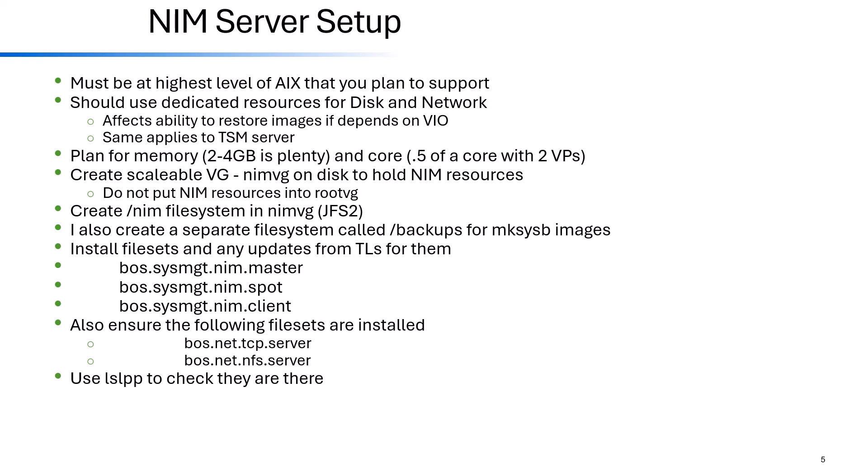If your NIM server is an LPAR rather than a dedicated server, give it dedicated resources — it should not get its resources from the VIO servers, since one of its purposes is to install and recover those VIO servers. It should have its own fiber card to the SAN and its own network card. For memory, typically eight to 16 GB is sufficient, and it only needs about half a core or two VPs. Create a volume group for NIM outside of rootvg — I typically call it nimvg — and create it as a scalable volume group because it may hold very large files.